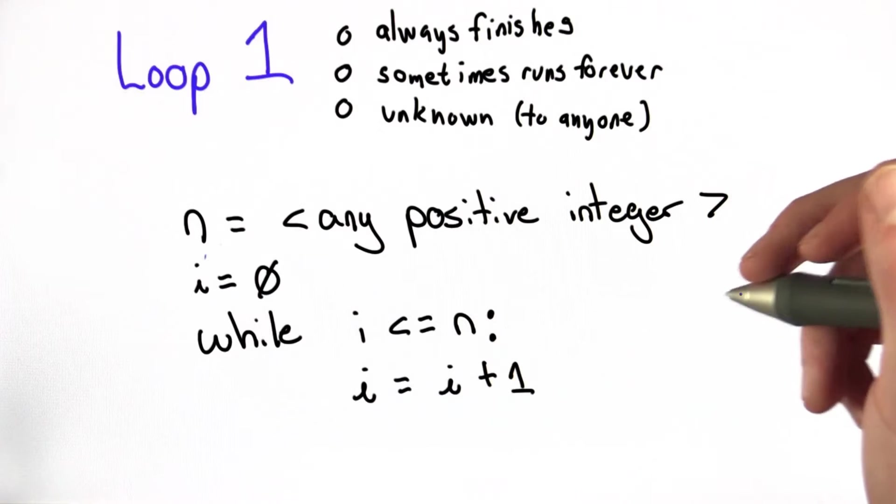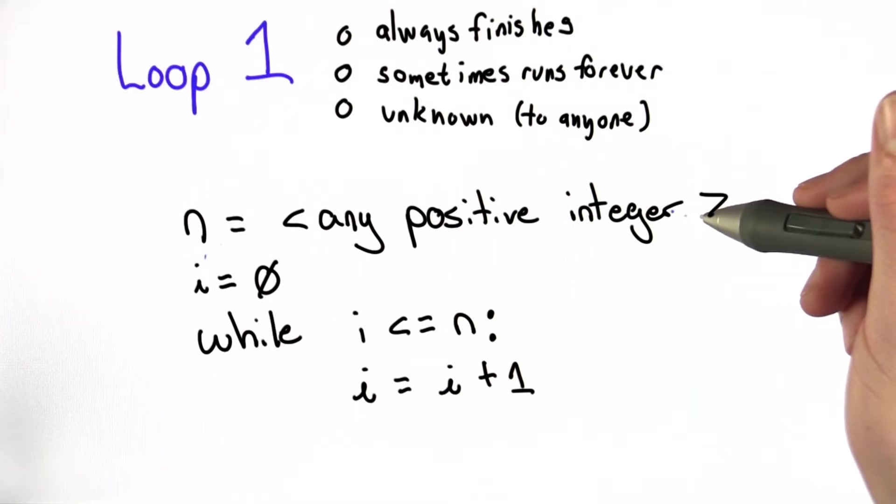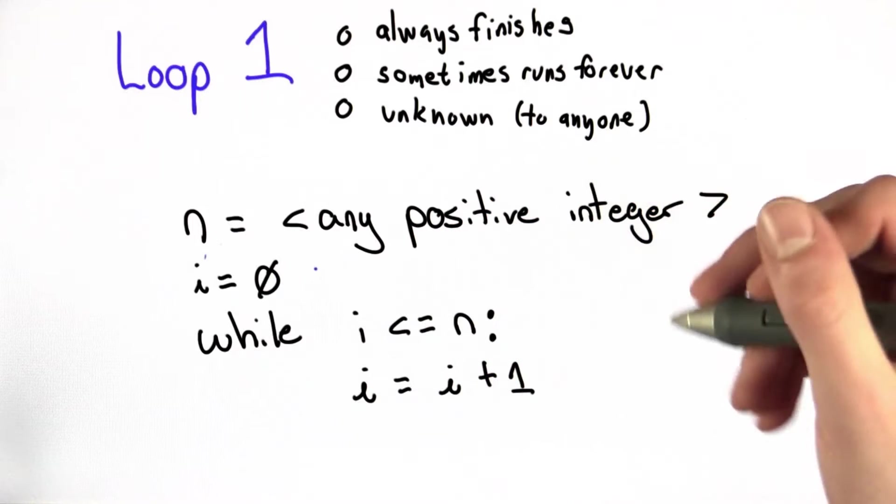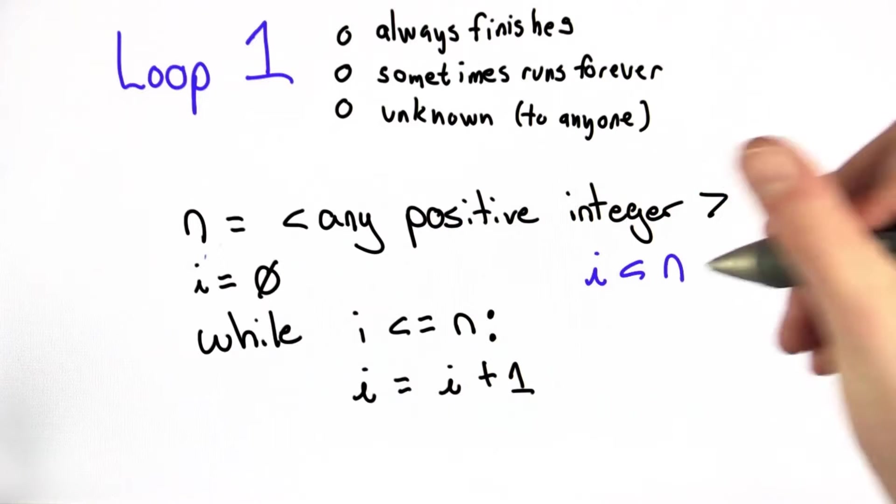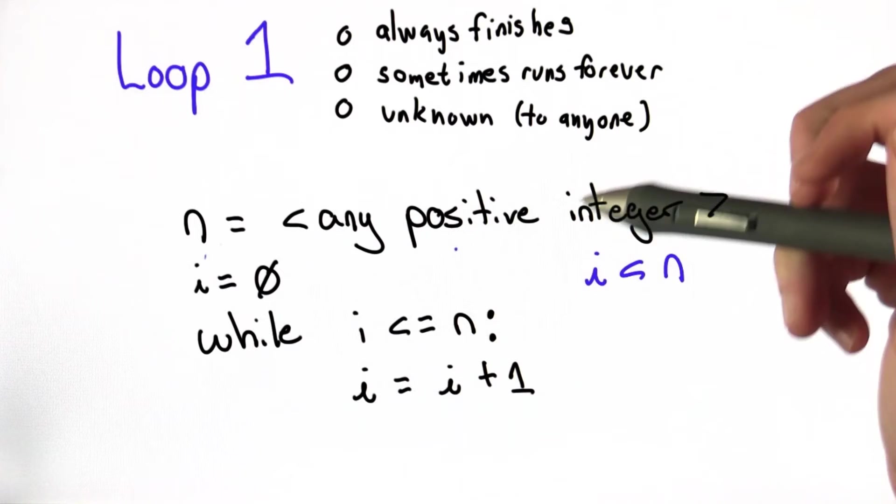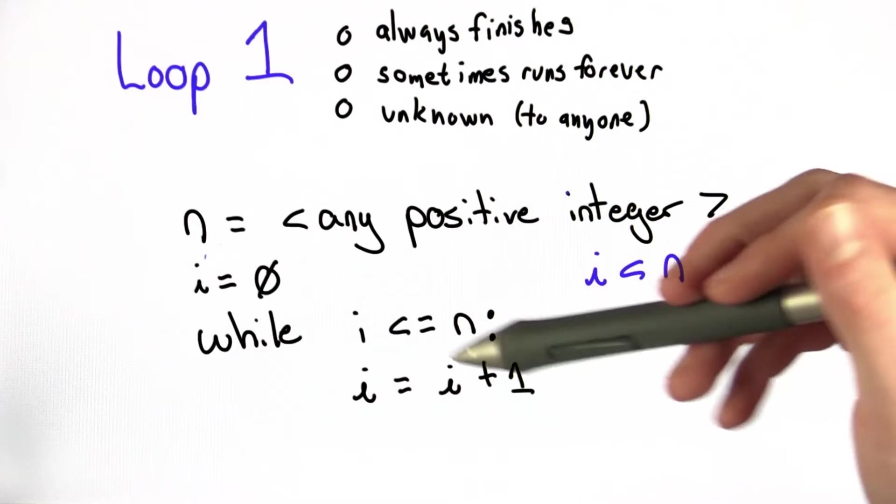Here's our first loop. Let's think about what we know. n is any positive integer and i is 0. We do know that i is less than n because 0 is less than any positive integer.